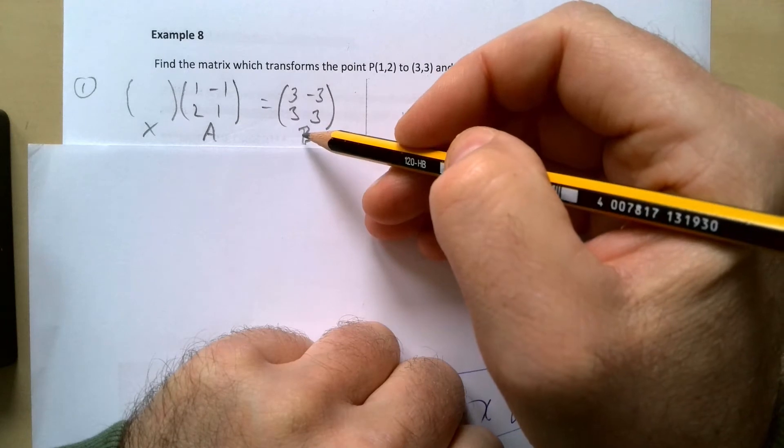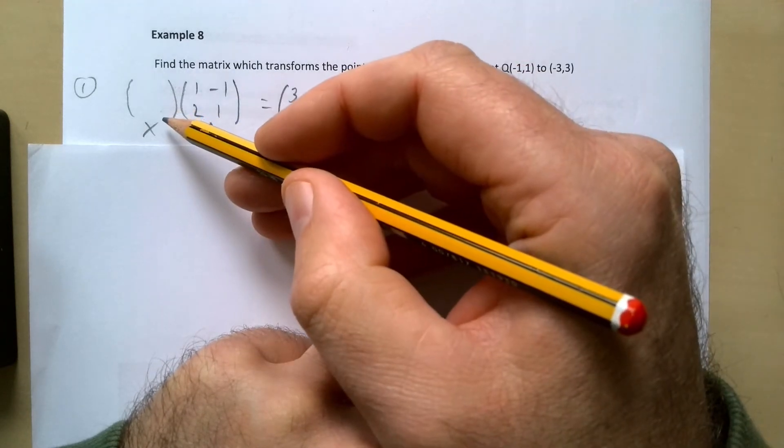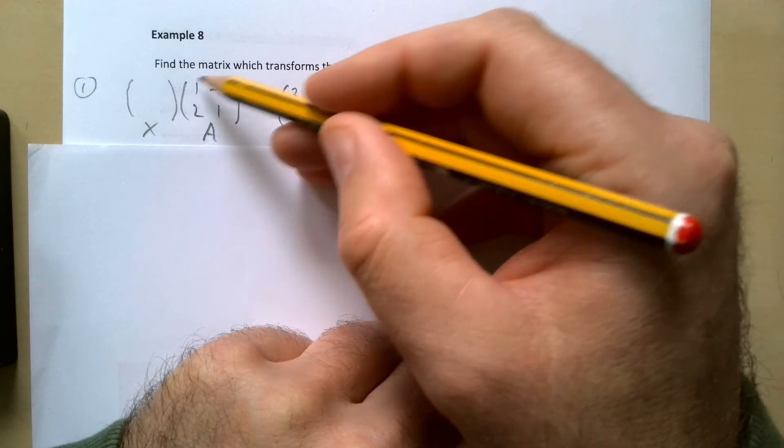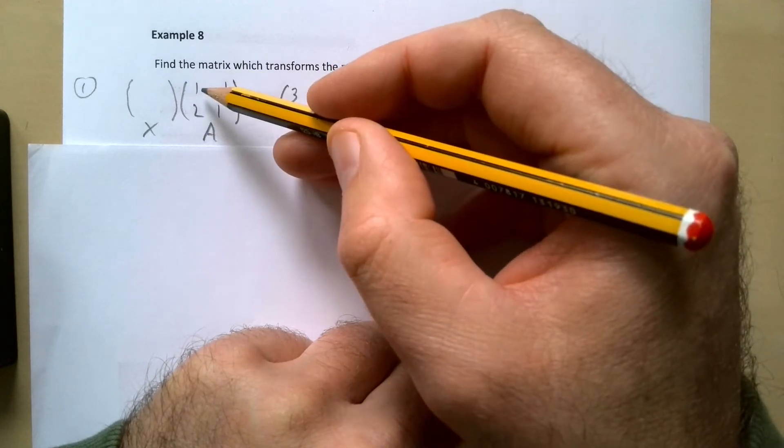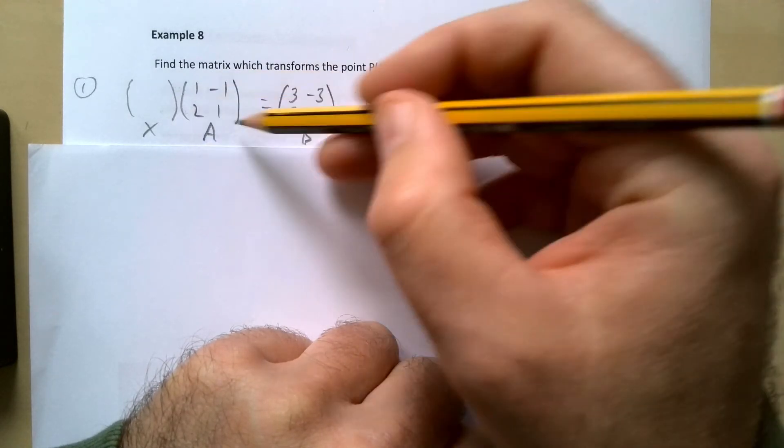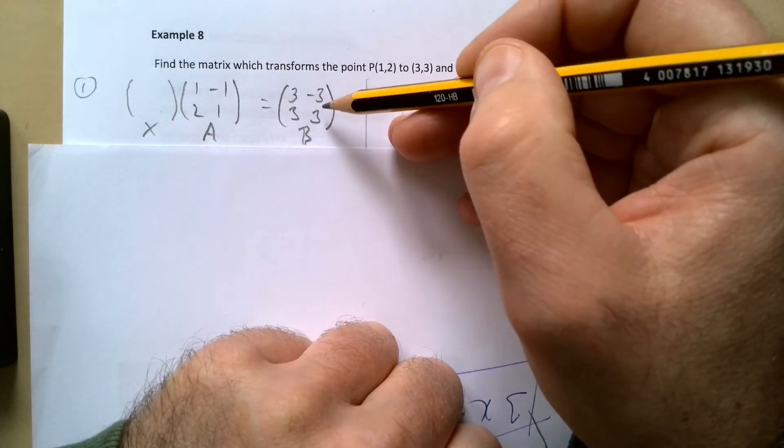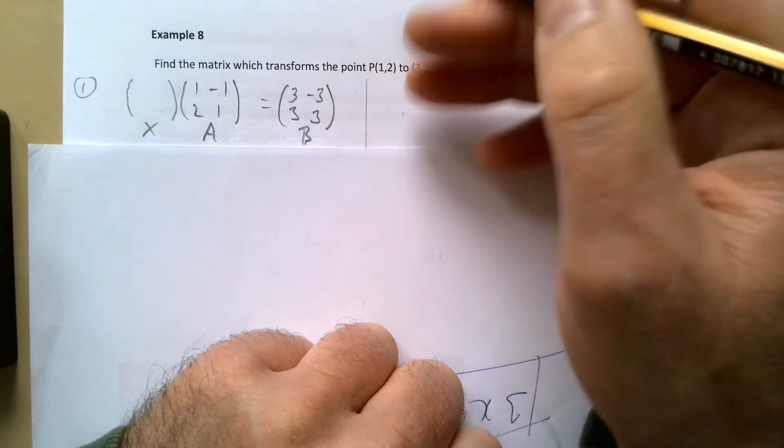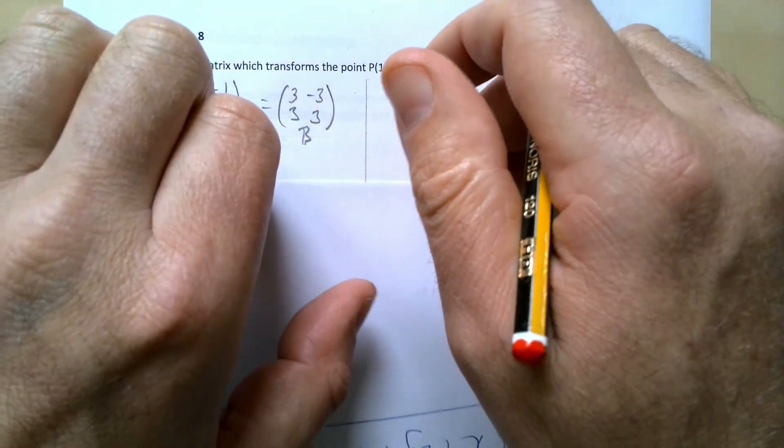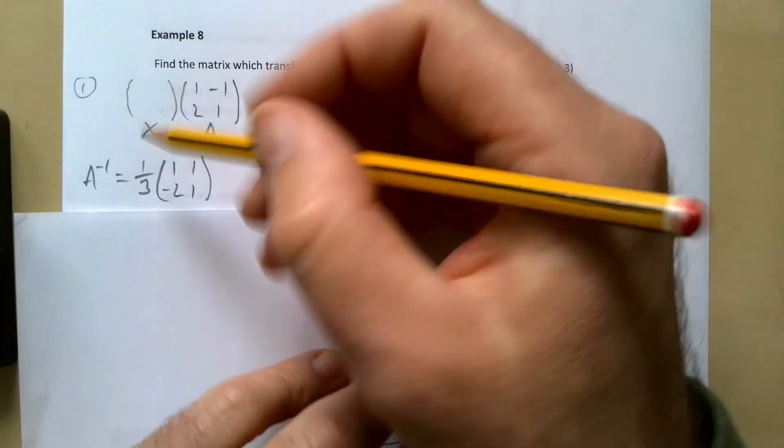How could I work out this X? How could I get it on its own? Well, I could find the inverse of this matrix here and if I find the inverse of this matrix and multiply both sides by this then that gets the X on its own. So what we're left over there on the right hand side then should give us the X.